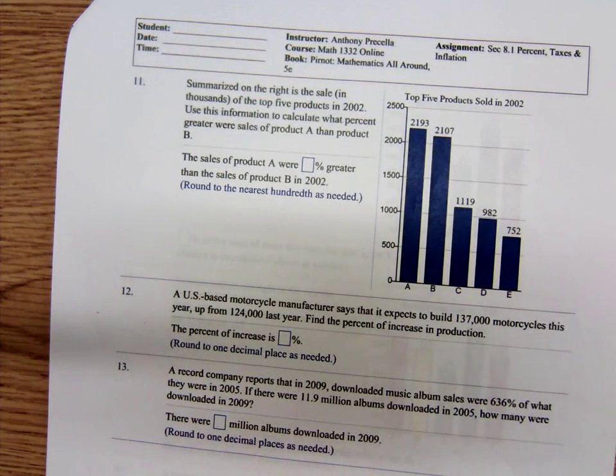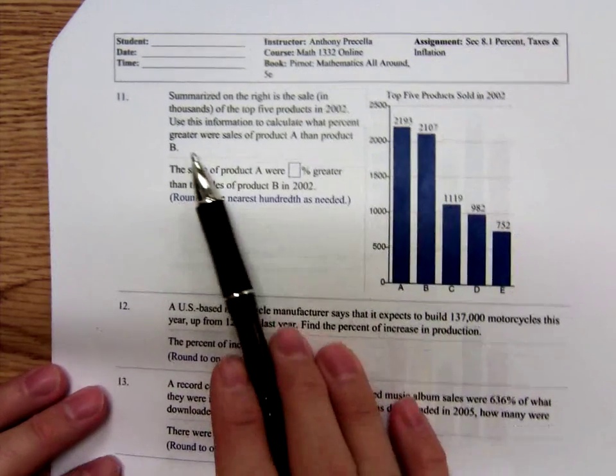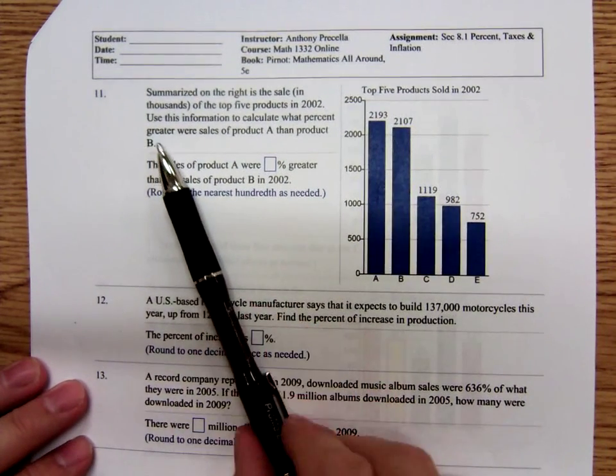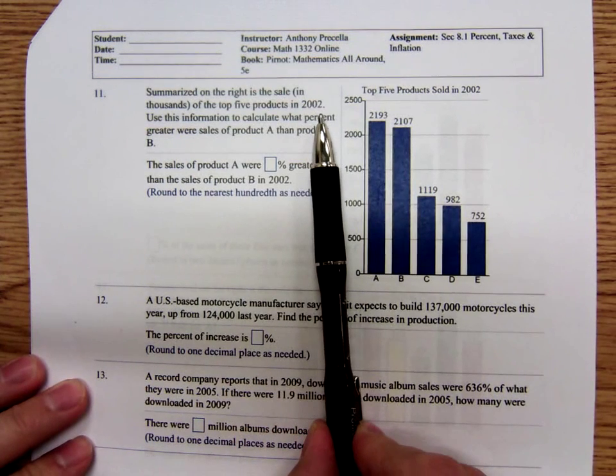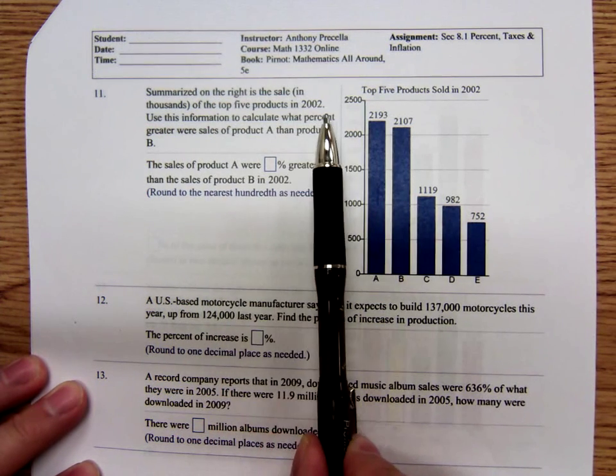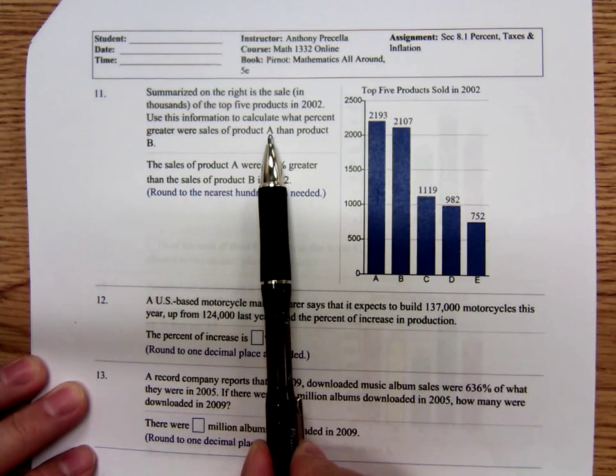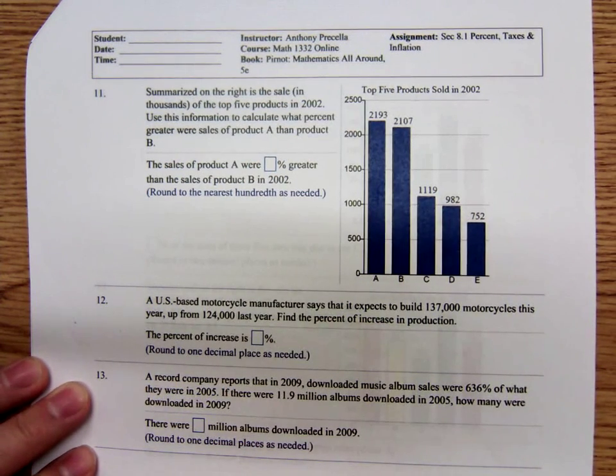Now let's see, time to do one or two more of these today. Problem number 11. Summarized on the right is the sale in thousands of the top five products in 2002. Similar to that other one, use this information to calculate what percent greater were the sales of product A than product B.